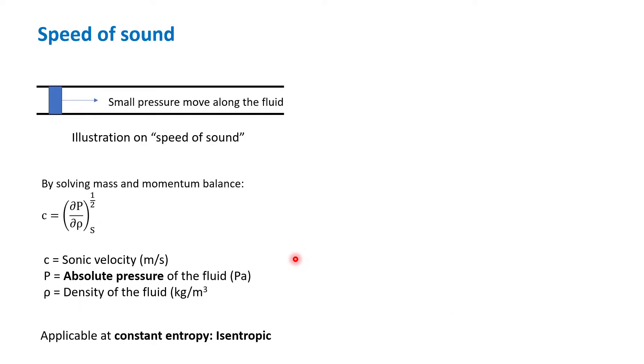If you assign position 1 here and position 2 here before and after the movement of the pressure, we can solve the mass and momentum balance and end up with this equation, where c is the speed of sound. Speed of sound is the square root of pressure divided by density.